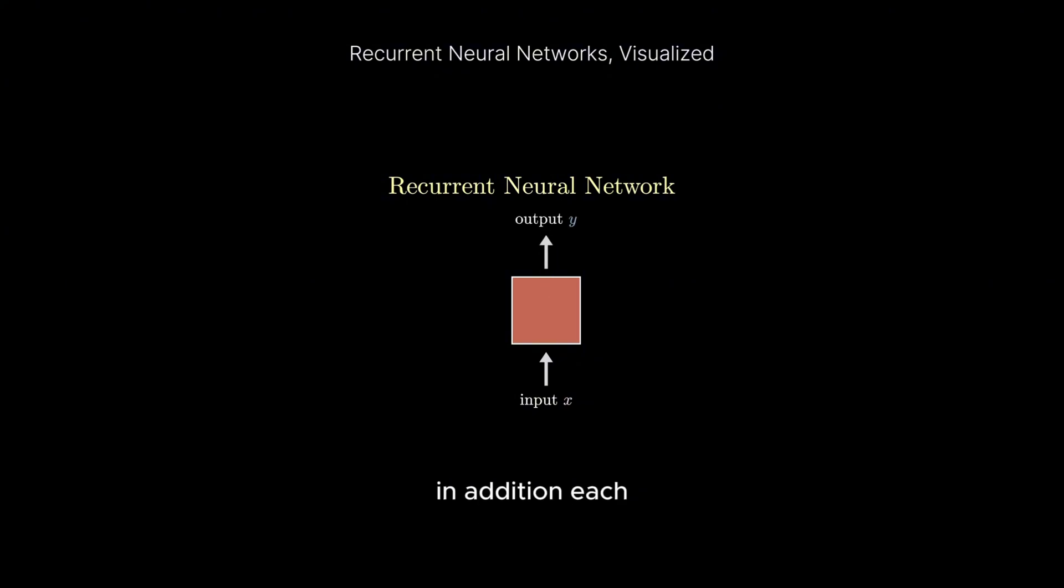In addition, each cell has a hidden state. The hidden state is meant to encode some representation of the text so far.